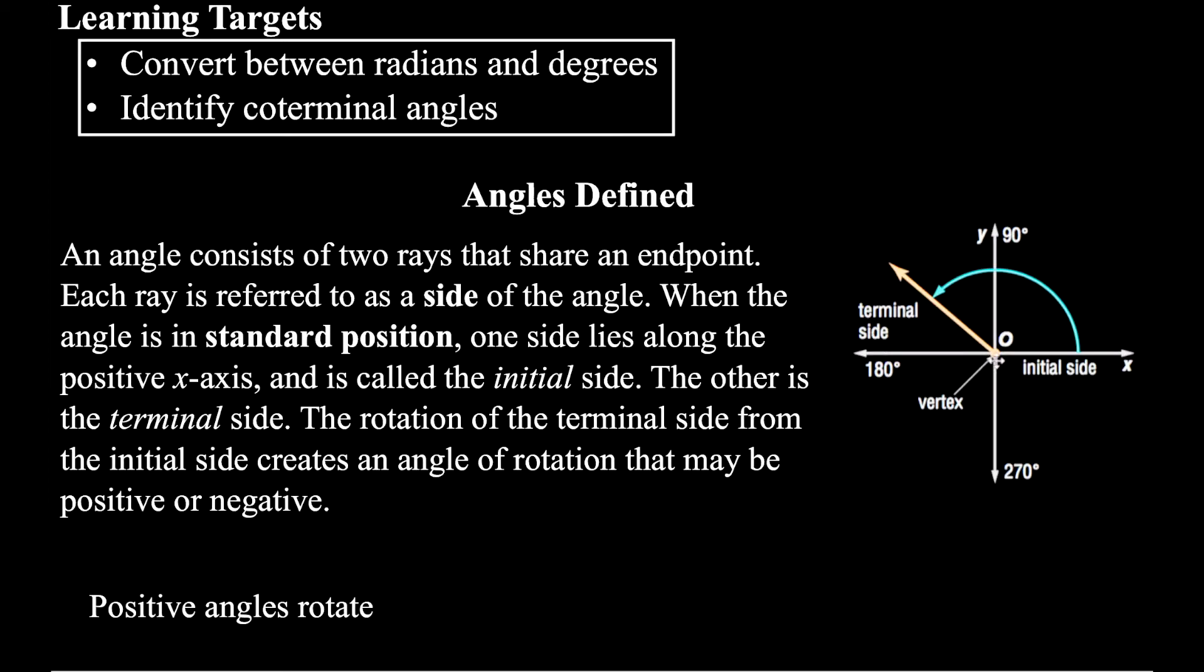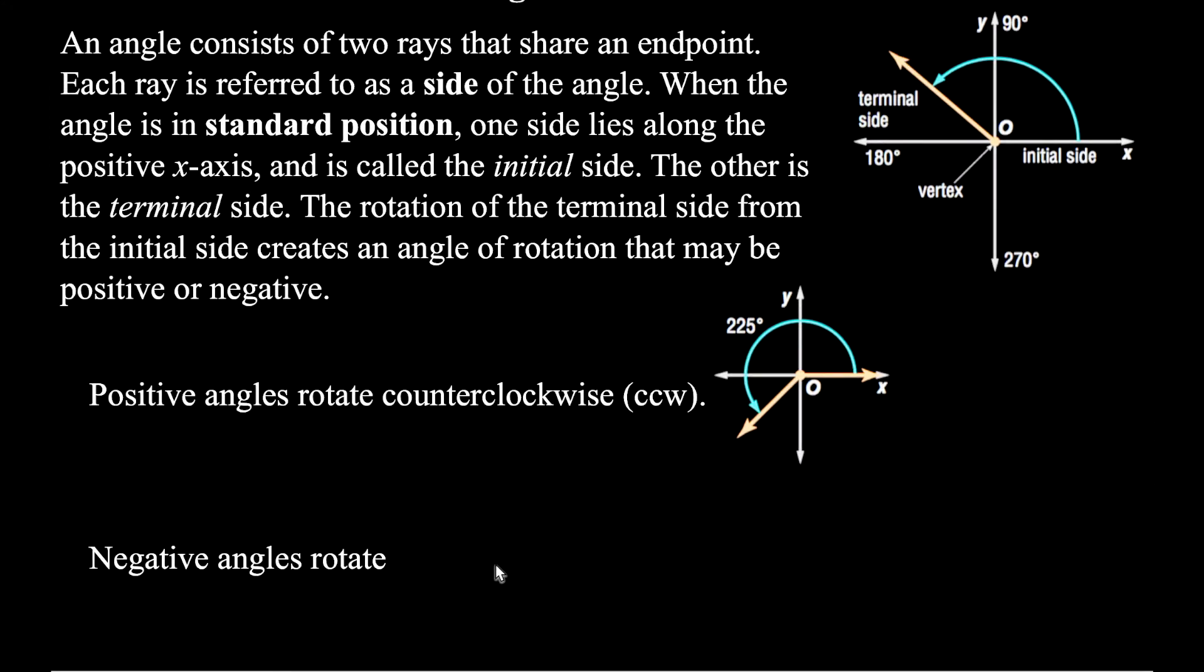And when the angle is in standard position in the coordinate plane, usually we have that vertex at the origin. And there's one side that lies along the x-axis, that's called the initial side. And then the terminal side rotates and forms the angle. And the rotation of that terminal side creates what we call an angle of rotation. If we rotate it in a counterclockwise direction, we say that that is a positive angle. But if we rotate it in a clockwise direction, then we say that's a negative angle.